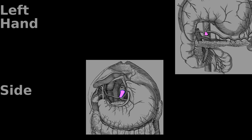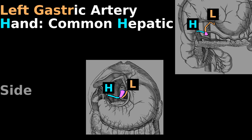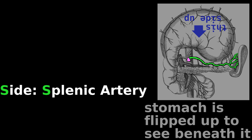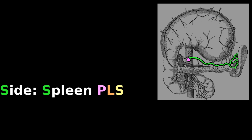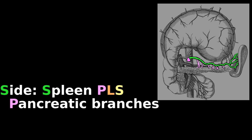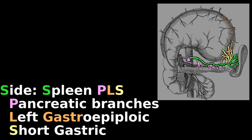Now we've covered left and hand, so it's time to wrap up with side. Side is also easy — it's the splenic artery, which reminds you of spleen please: pancreatic branches, left gastroepiploic, short gastric arteries.